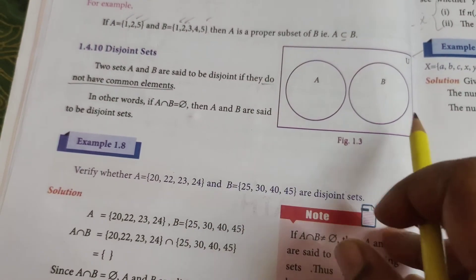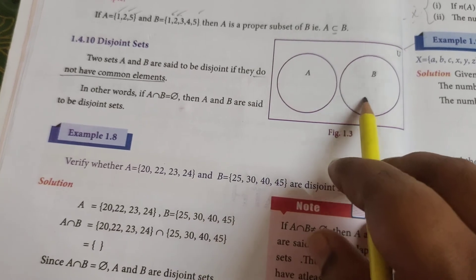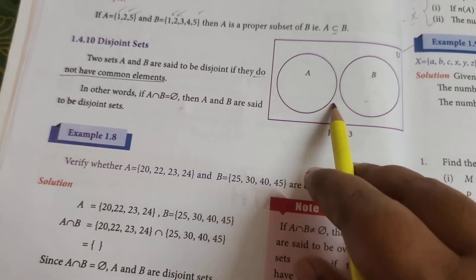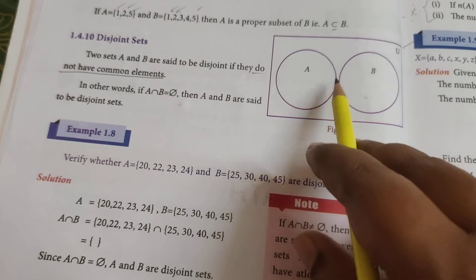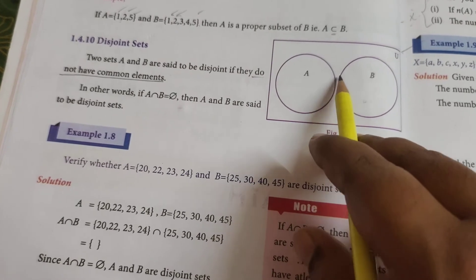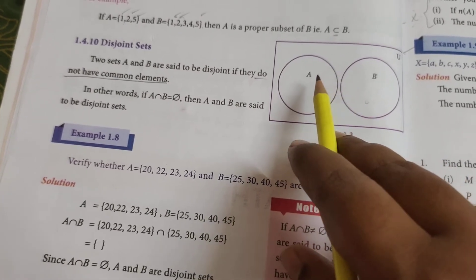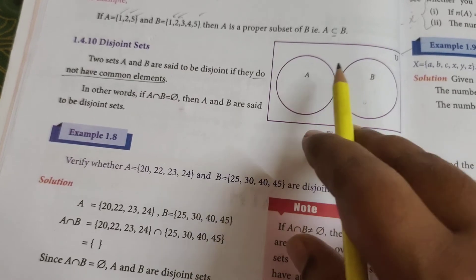See here, given one picture—this is the universal set. It has A and B, two elements, but there is no joint in A and B. There is no connection here. There is no common point here.